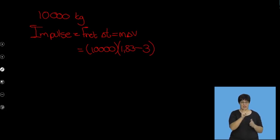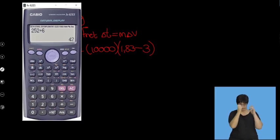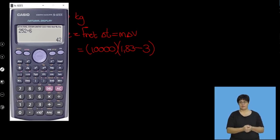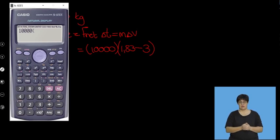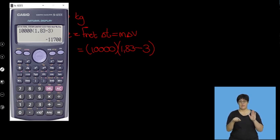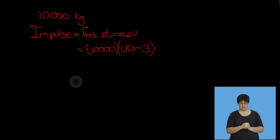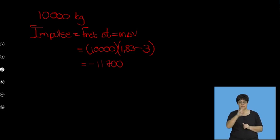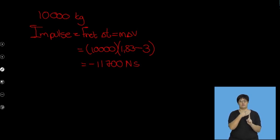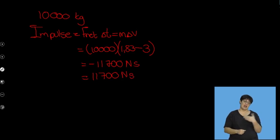Putting this into the calculator, we get minus 11,700. But we always express it as a magnitude with direction, so it's 11,700 newton seconds to the left.